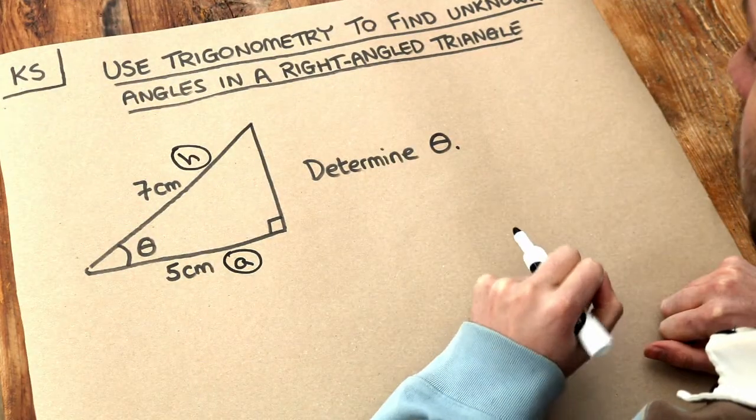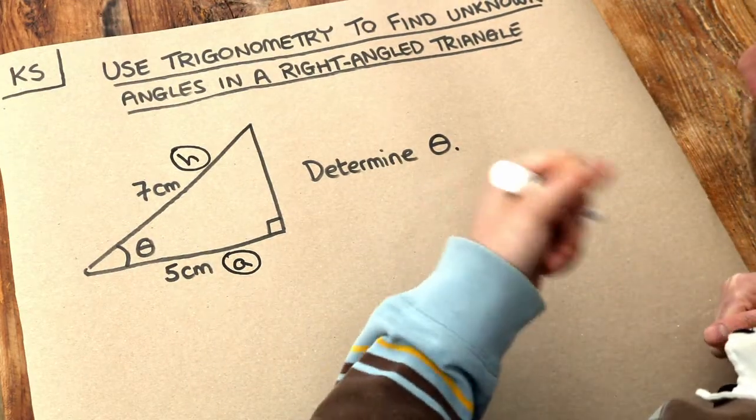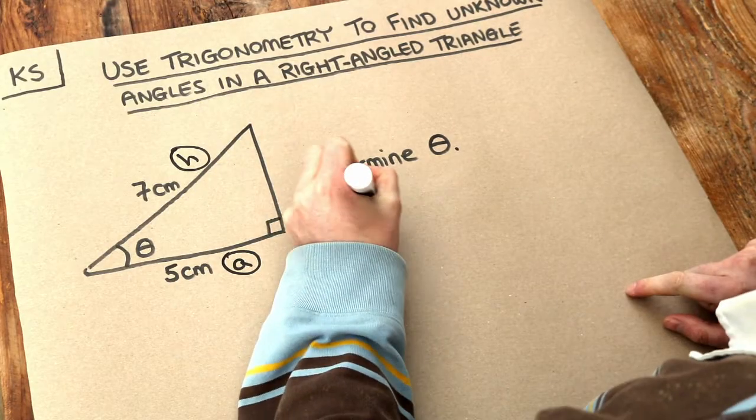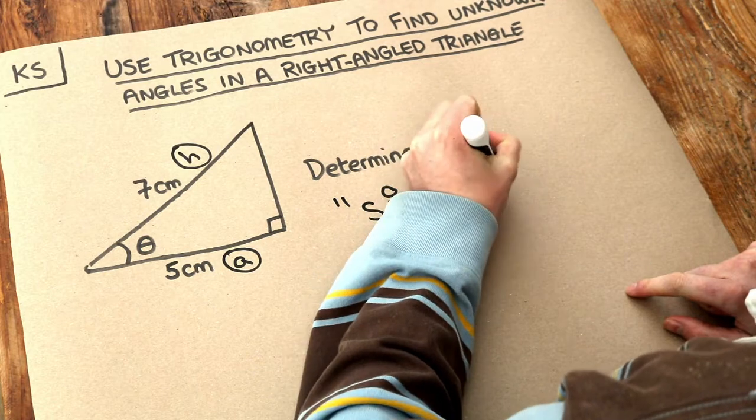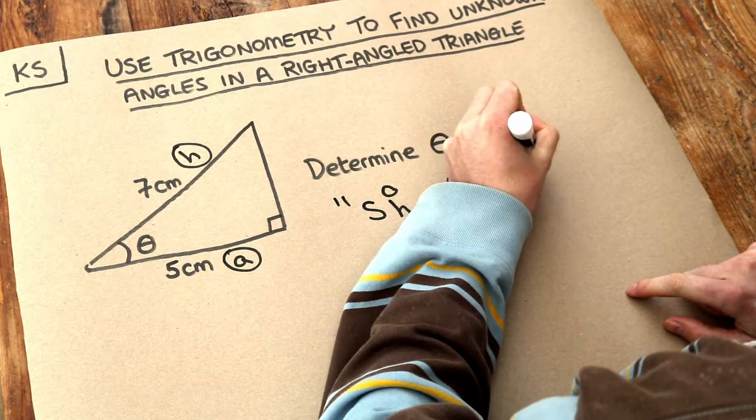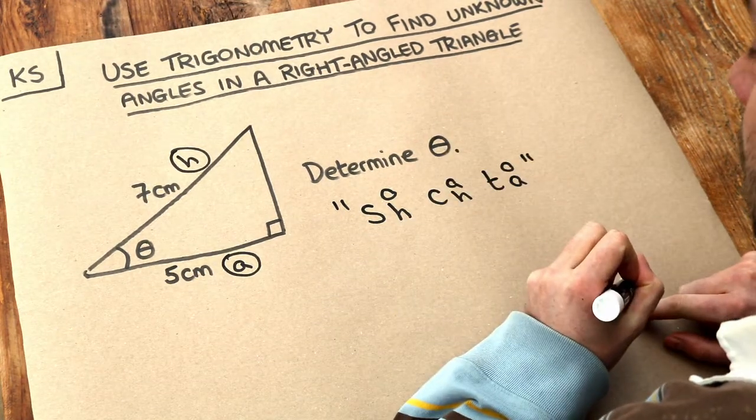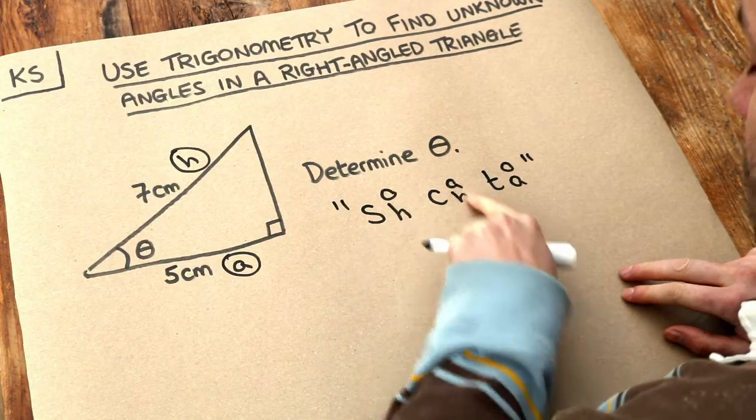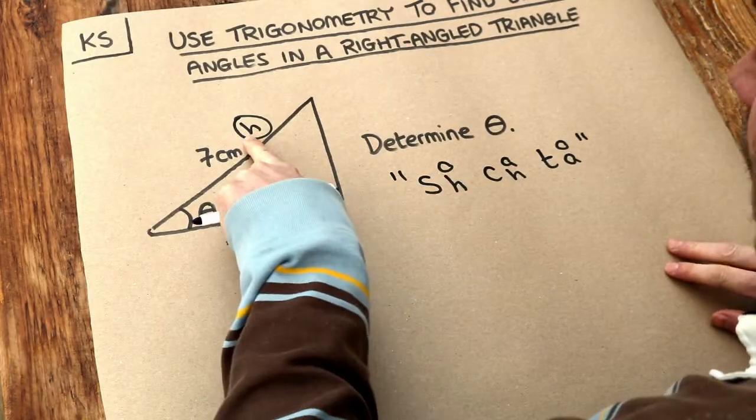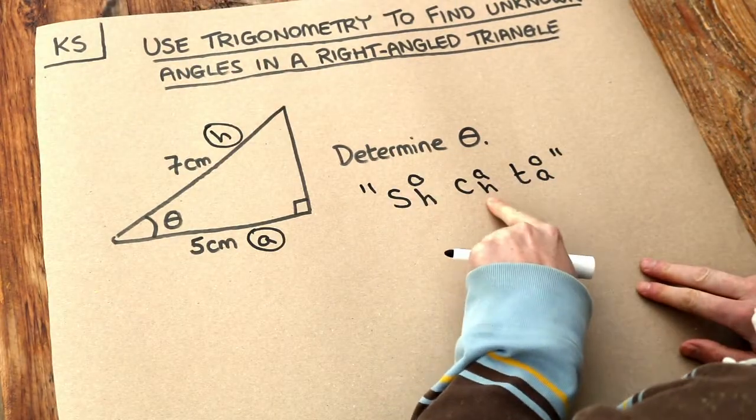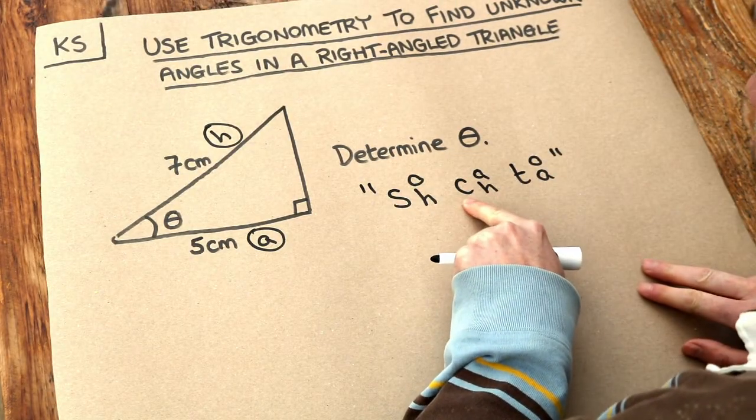Step two is to work out whether we want to use sine, cos or tan. Remember we had a little mnemonic called SOH-CA-TOA. That allows us to decide which of sine, cos or tan we use. These are the sides being used for each. Now we're involving A and H. Which one uses A and H? Well it's this one here. So we want to use cos.